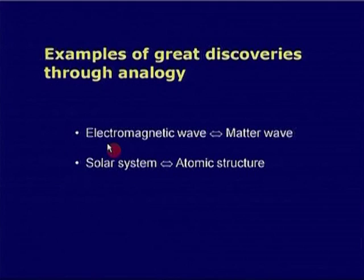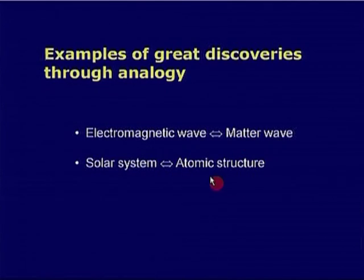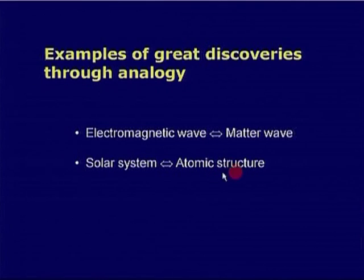Two great discoveries — the discovery of matter waves and the discovery of atomic structure — happened through analogical thinking. The matter wave was discovered as an analog of the electromagnetic wave, and the atomic structure was discovered as an analog of the solar system. Let us take the simpler of the two first: the solar system and the atomic structure.